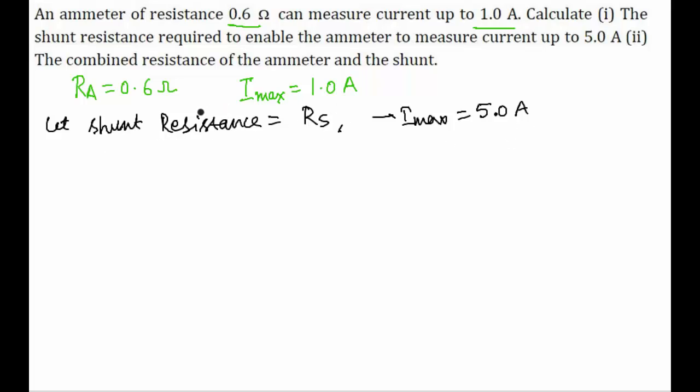The voltage difference across the ammeter when allowing this maximum current of 1 ampere will be I into R that is 1 into 0.6. And the voltage difference across the shunt plus ammeter allowing the maximum current of 5 ampere will be R equivalent into 5.